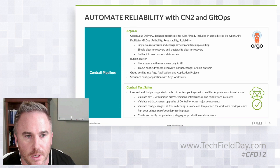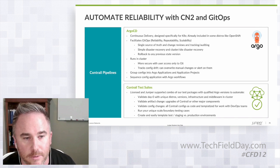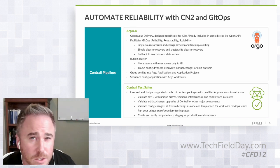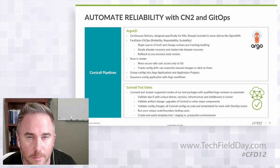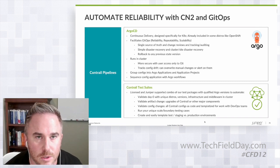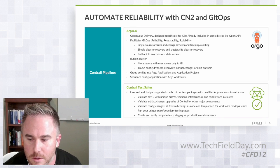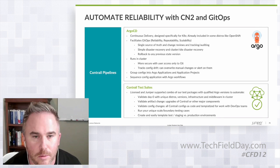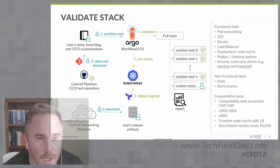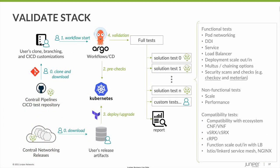It facilitates a GitOps method and a single source of truth towards that environment, so you're able to leverage a bunch of different test suites that we'll have with this, and also handle configuration drift. Just a quick overview here of some ideas around validating the stack and how you can use Contrail pipelines to do that.